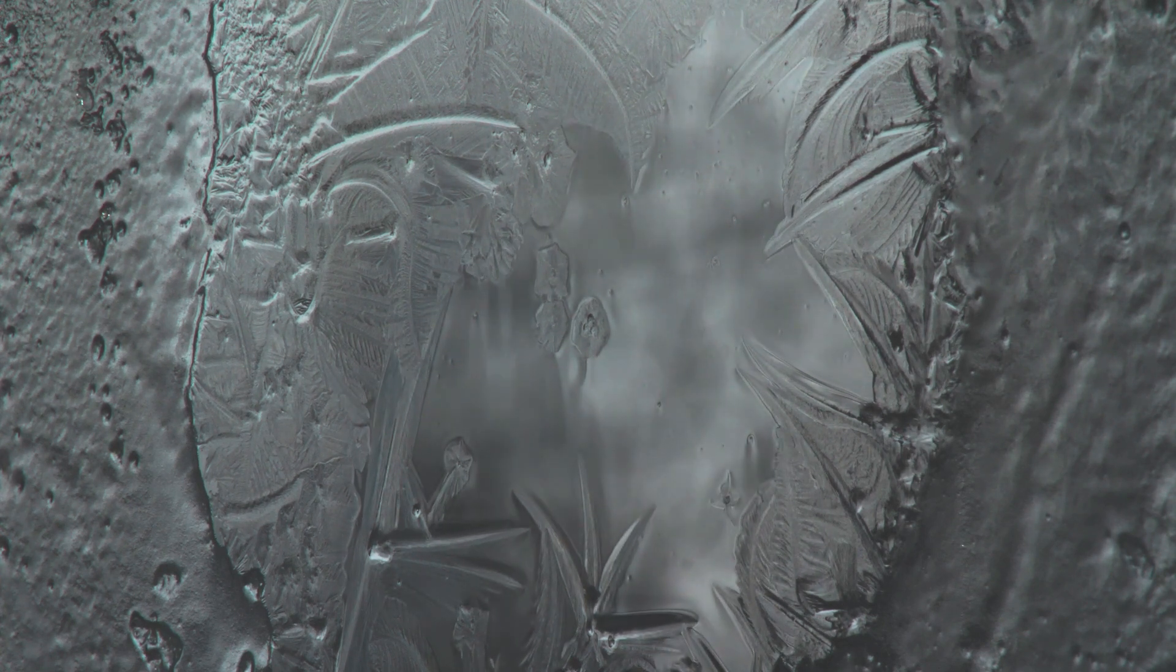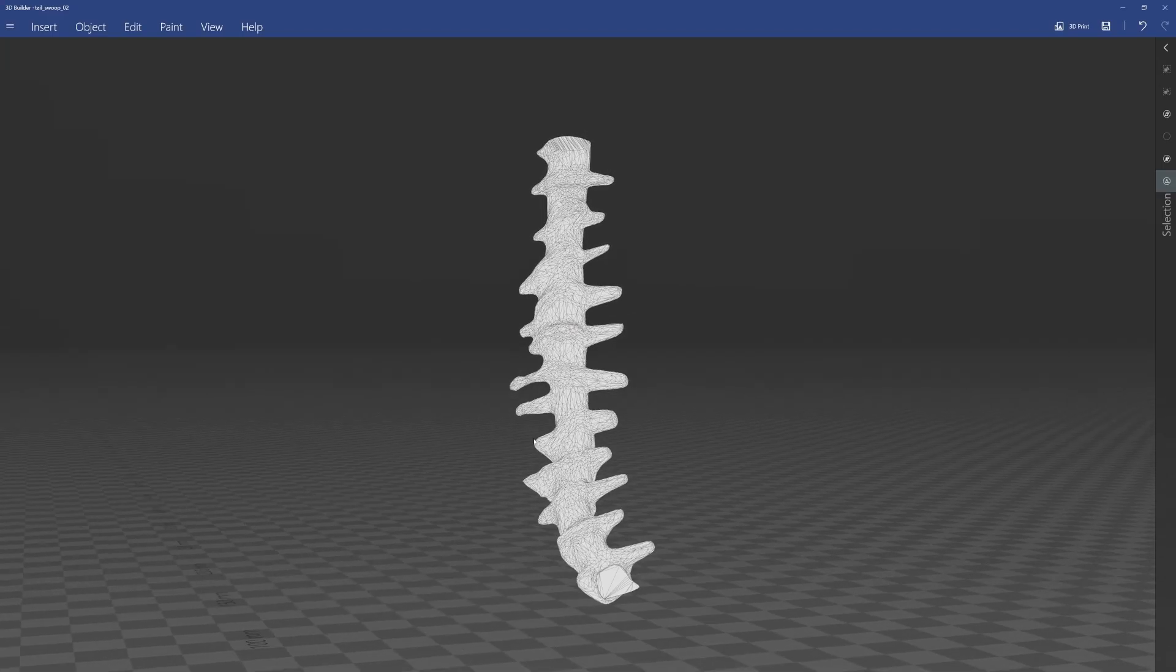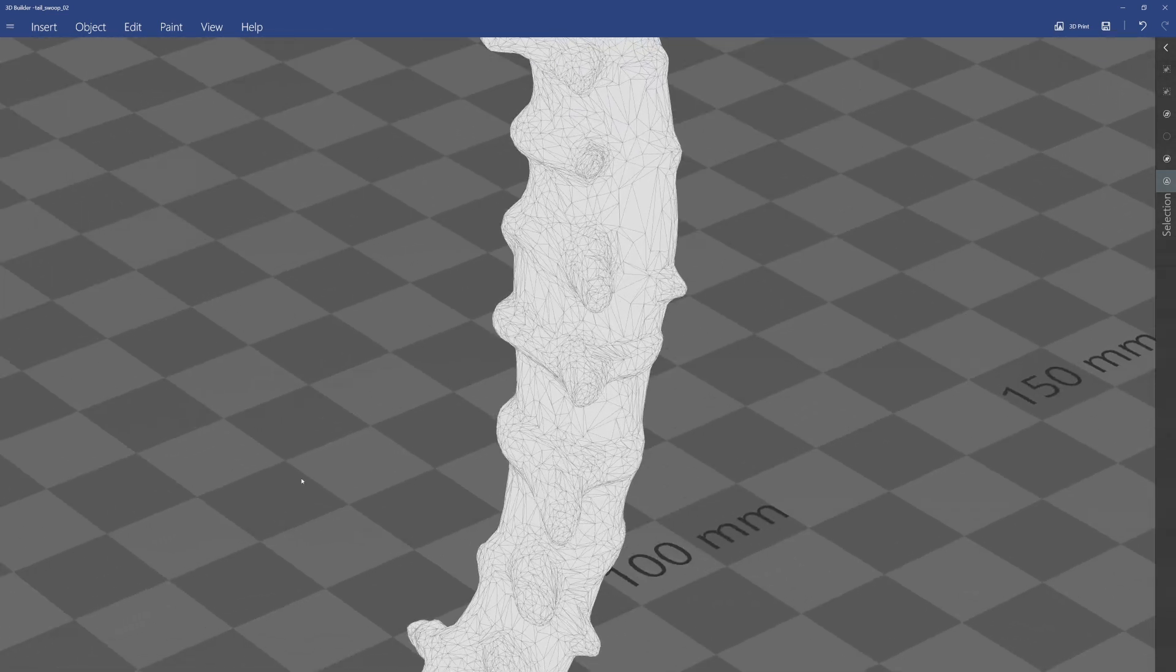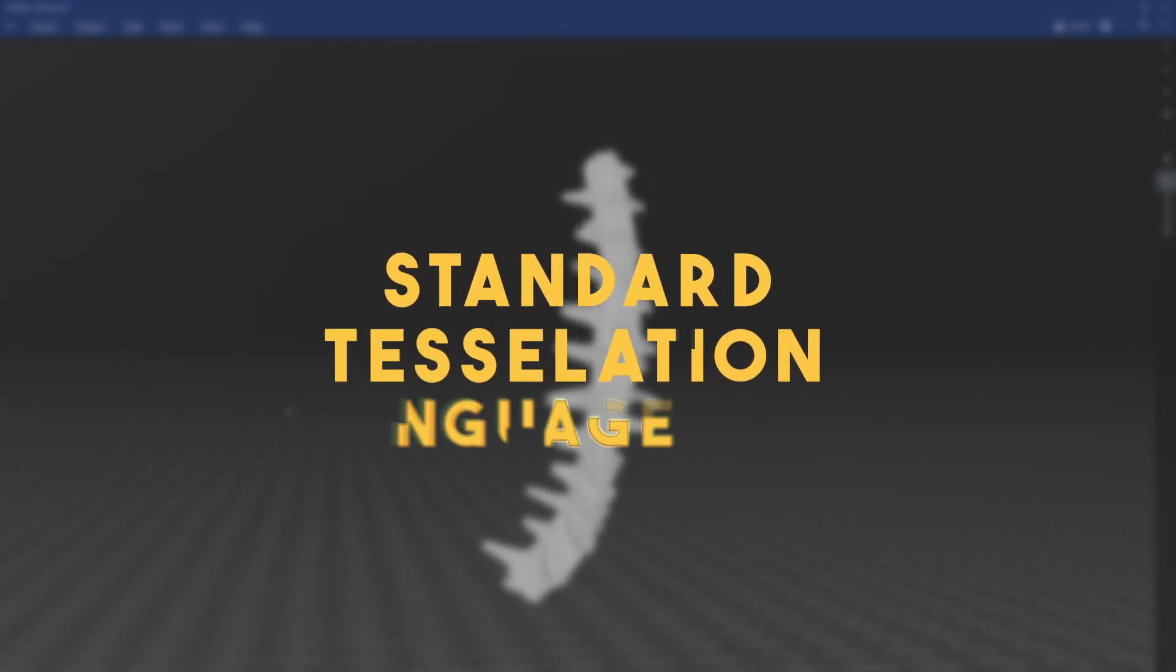This solidification is called cross-linking, as polymer strands are linked together during this process. Most bioprinters use STL files, which represents 3D structures as triangular tessellations. STL literally stands for Standard Tessellation Language.